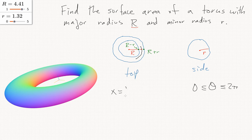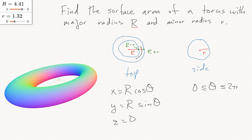So x equals big R cos theta, y equals big R sine theta, and so far z is just zero. Our theta variable is measuring the angle around the central circle. Our phi, our second parameter, will be the angle phi around the tube cross-section.